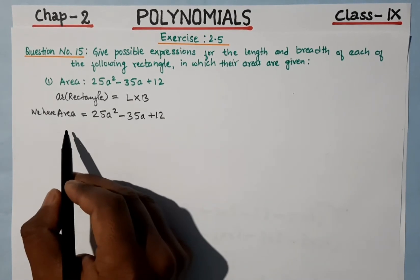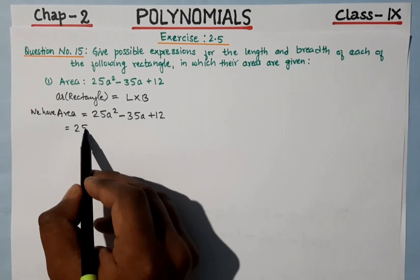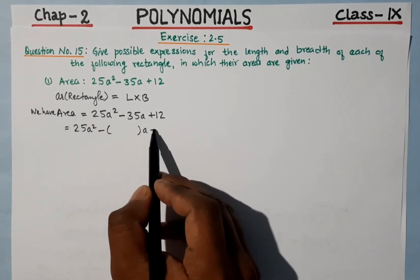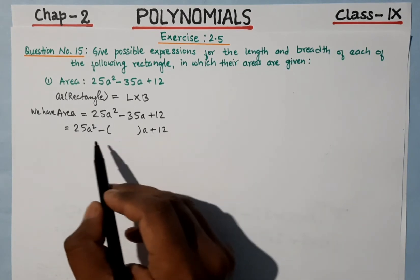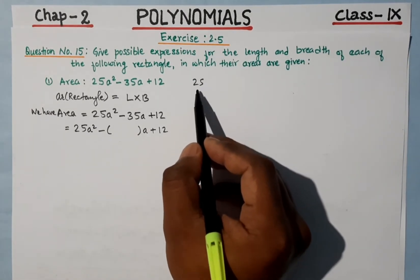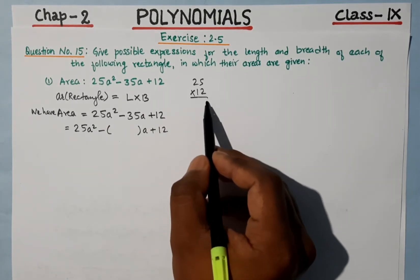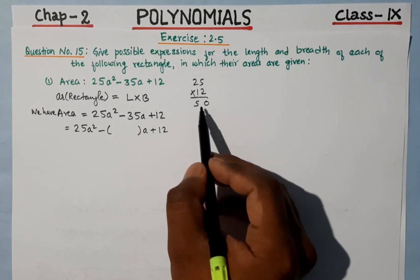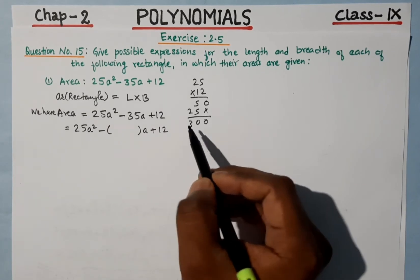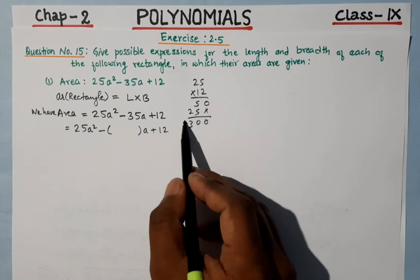We need to find the product of 25a into 12, which gives us 300. We need to break 35 into two numbers that add to 35 and multiply to 300. That means both numbers are negative.